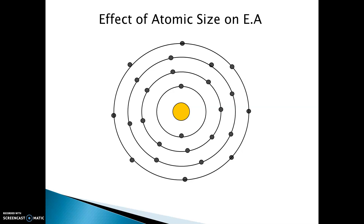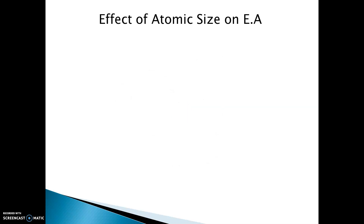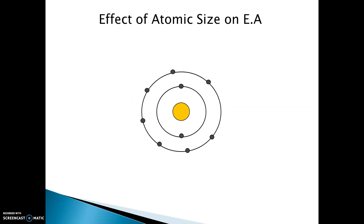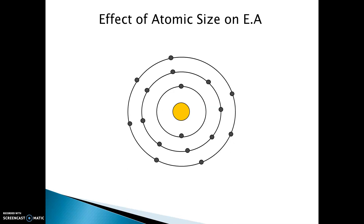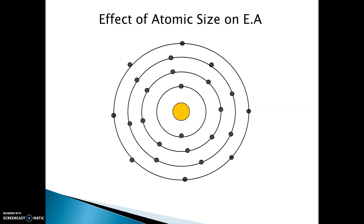Now let's see the speed of addition of an electron into the outermost shell of these atoms. For fluorine, when an electron is added, the speed is slower, meaning electron affinity is less. For chlorine, the electron is added with greater speed, meaning electron affinity is more.